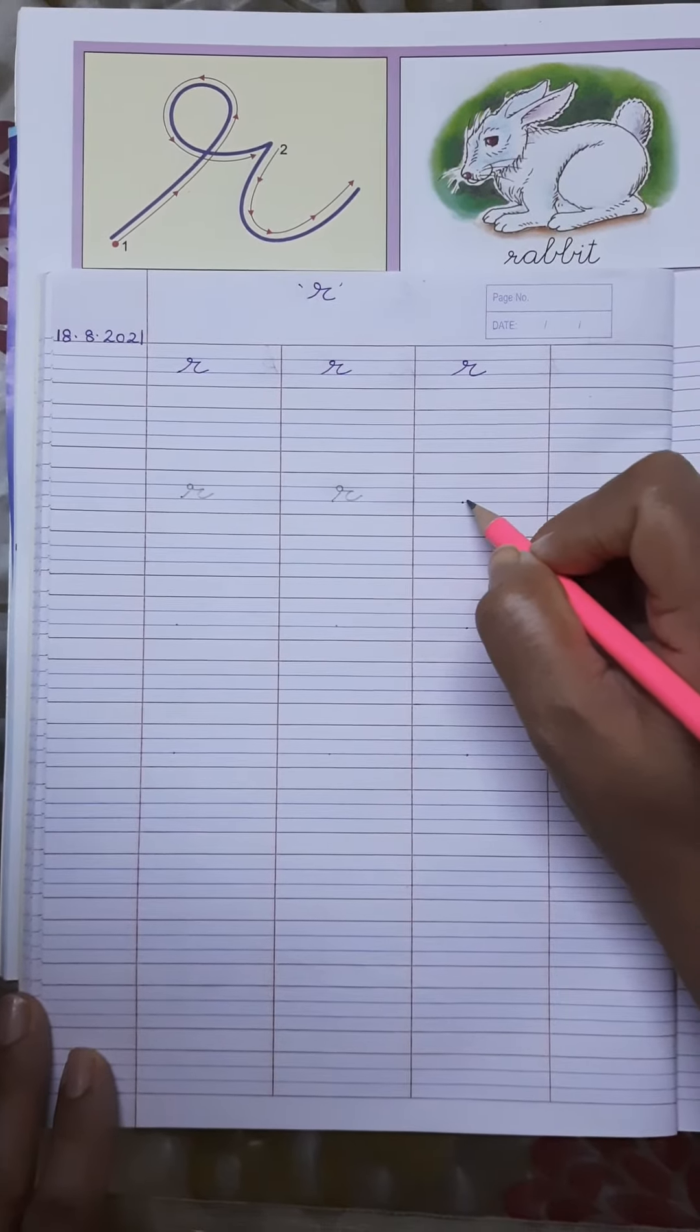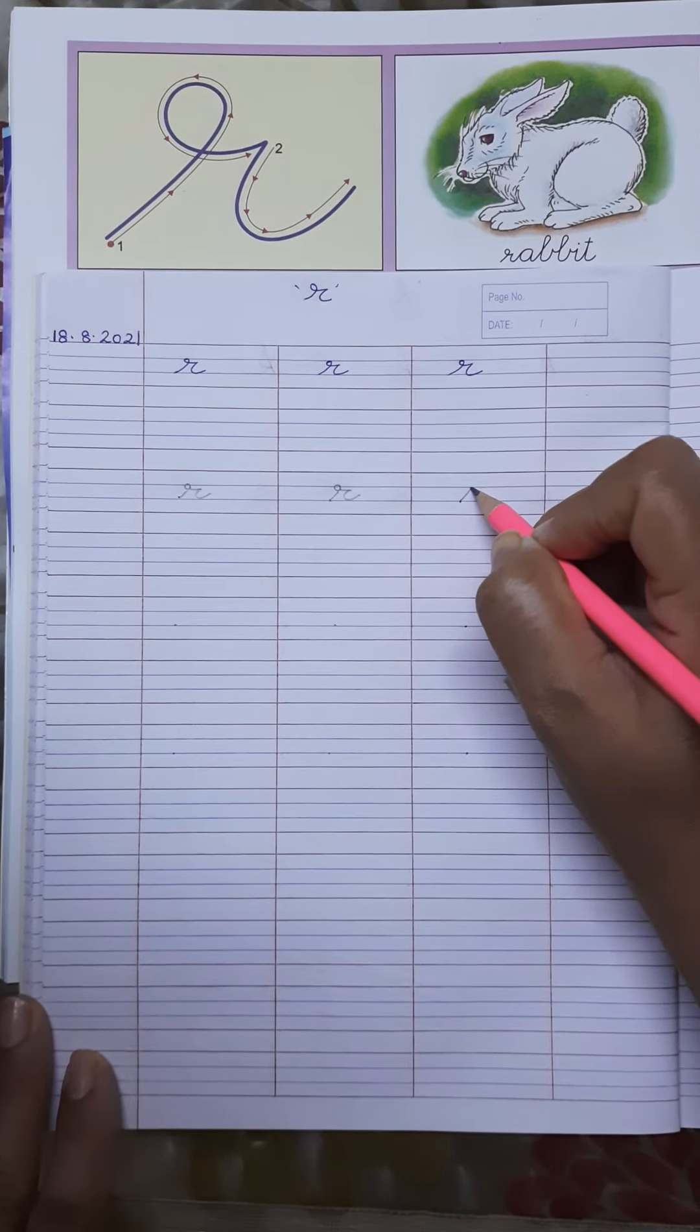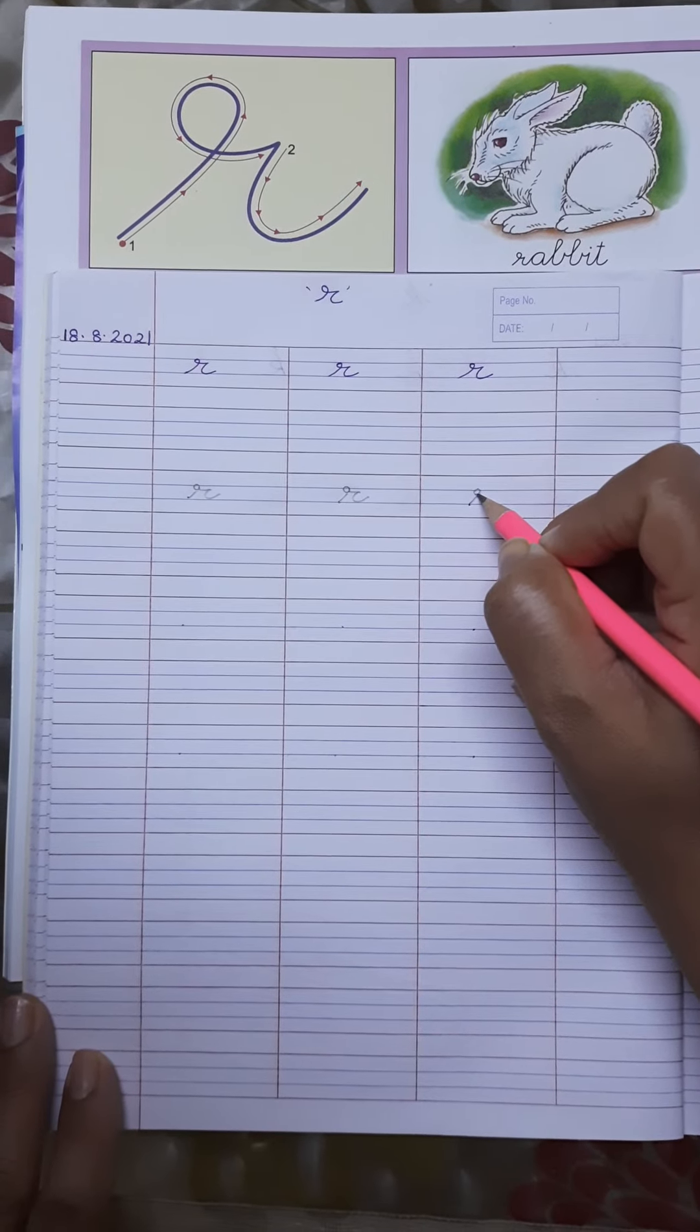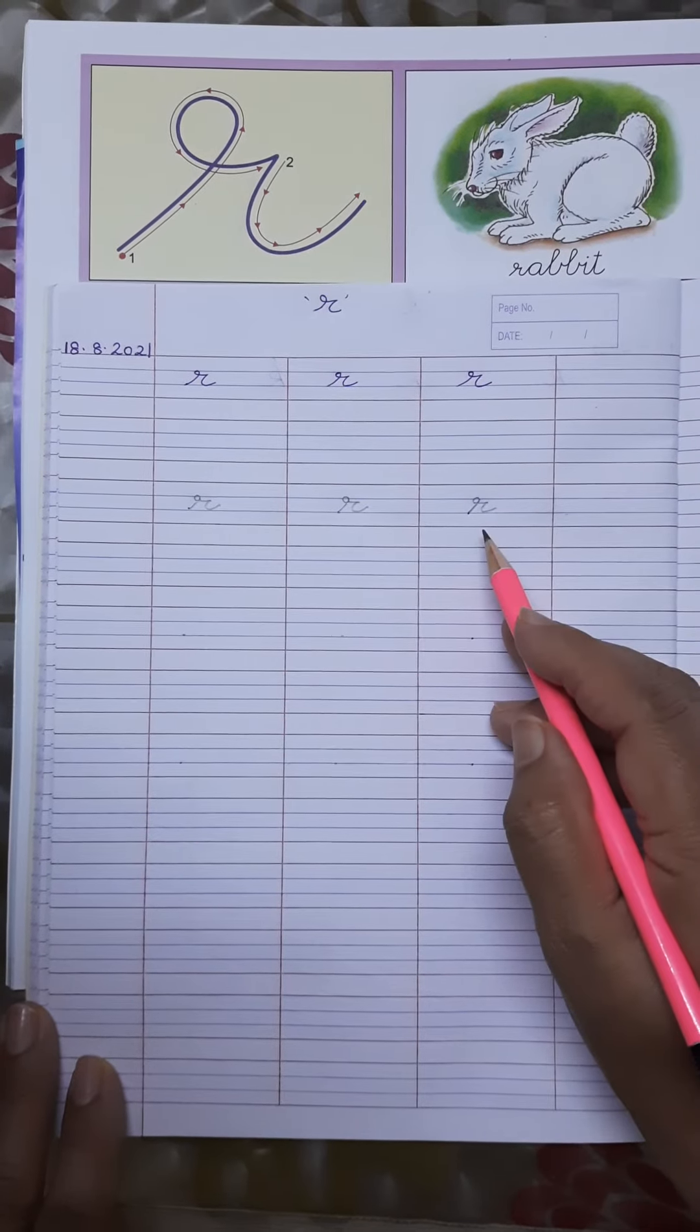Let's write it once again. From the bottom blue line to the upper blue line. Make a small circle. Come out. Make a sleeping line and make a curve like this. R.